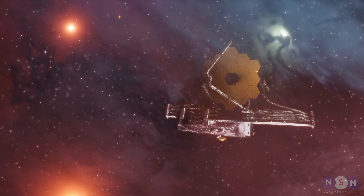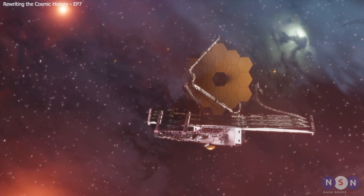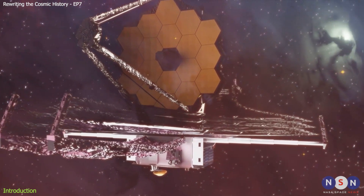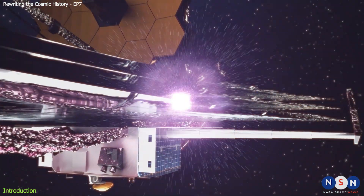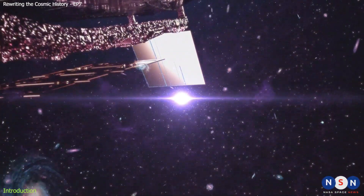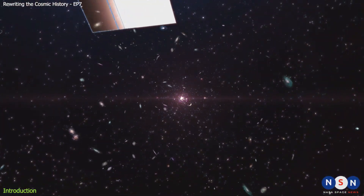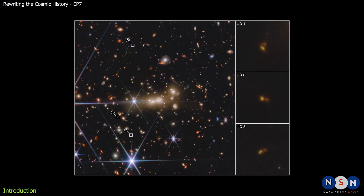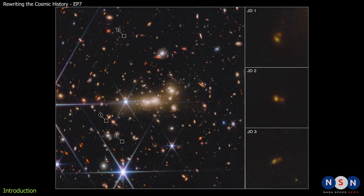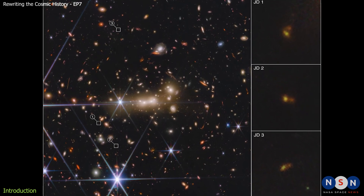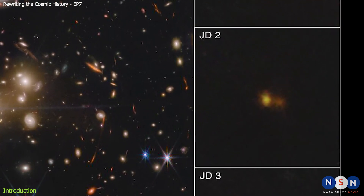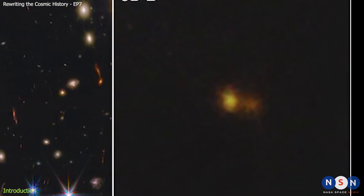As the James Webb Space Telescope continues to make amazing discoveries, many people are curious about what the universe looked like when it was only 400 million years old. How did the first galaxies form and evolve in such a short time, and how can we see them today? The James Webb Space Telescope has just revealed another stunning discovery — a pair or small group of galaxies that formed when the cosmos was only 3% of its current age.